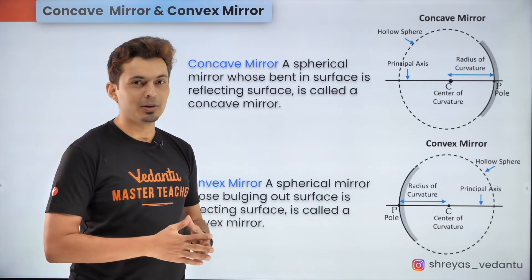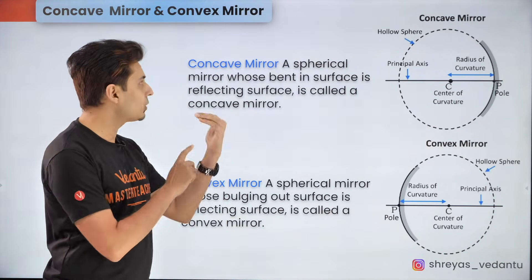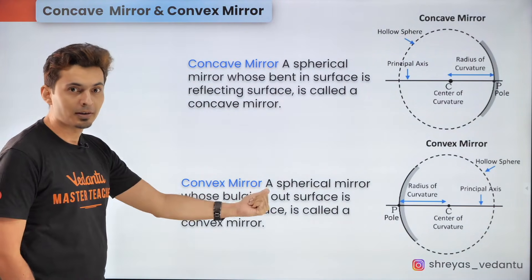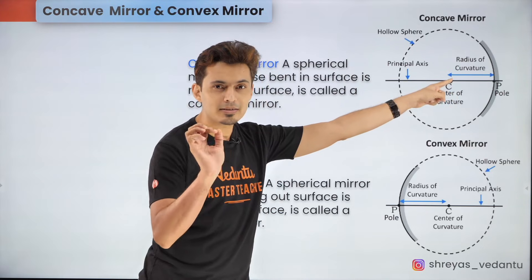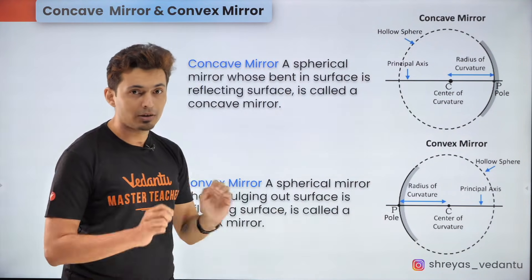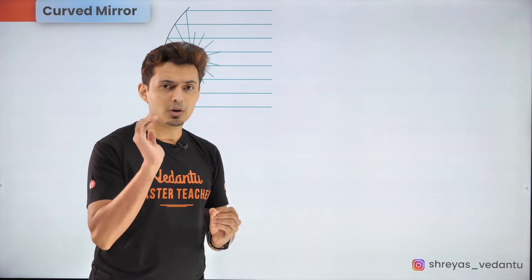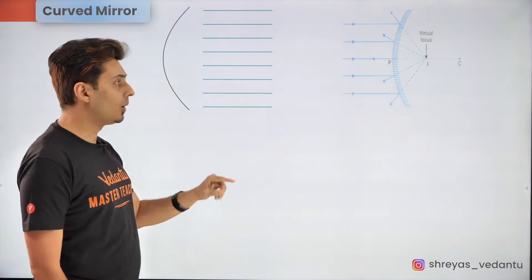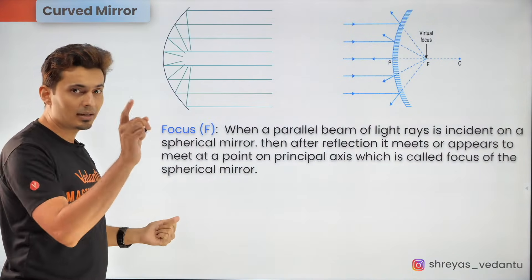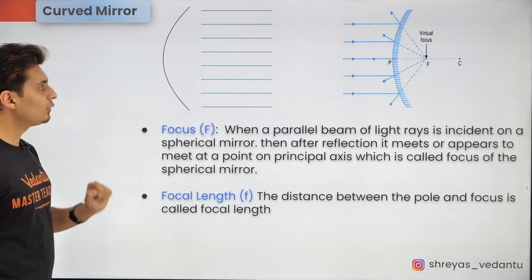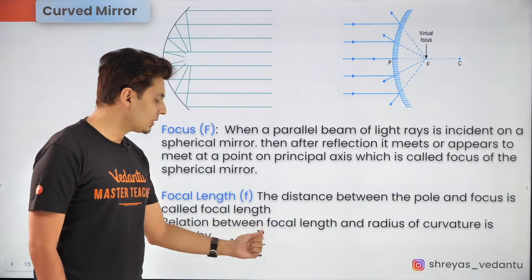Now that we have spoken about plane mirrors, let's talk about curved mirrors. Concave and convex mirrors are nothing but a part of a bigger spherical mirror. When you silver the outer surface it becomes a concave mirror, and when you silver the inner surface it becomes a convex mirror. The center of the bigger sphere is called the center of curvature and its radius is the radius of curvature. The pole is the center of that curved mirror and the line passing through the center and the pole is the principal axis. For a concave mirror, parallel rays merge at the focal point; for a convex mirror they appear to diverge from the focal point. The focal length f equals R divided by 2.